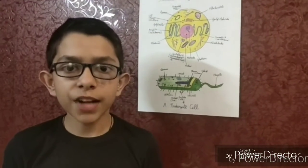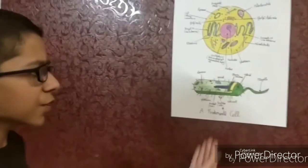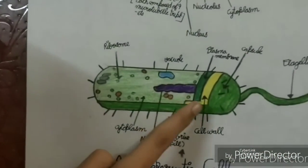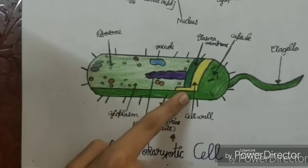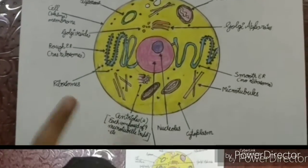So I will start from the cell wall. It provides integrity to the cell and forms the outermost layer of the cell. It is made up of peptidoglycans in prokaryotic cells and is made up of cellulose in plant cells. However, it is absent in the animal cells. As you can see over here, this is a prokaryotic cell in which a cell wall is present. However, in an animal cell, the cell wall is absent.